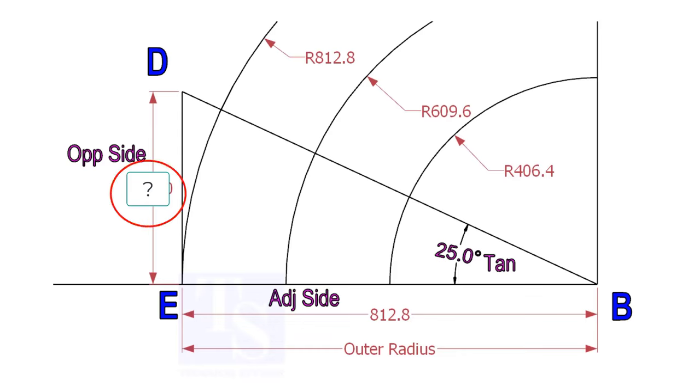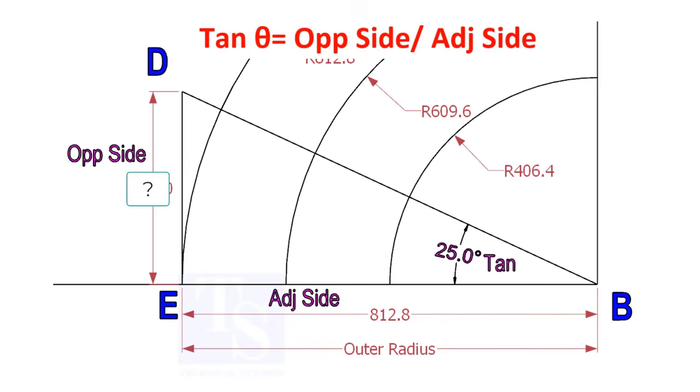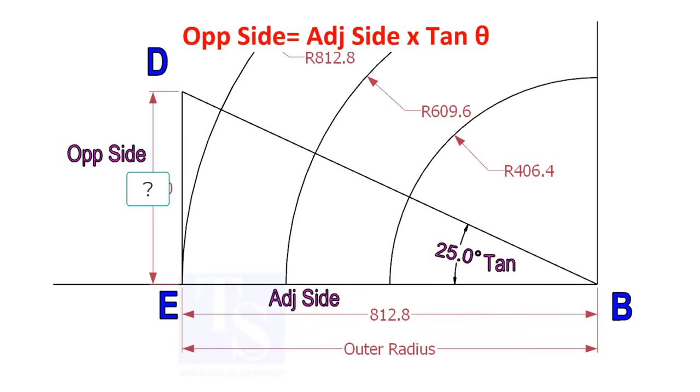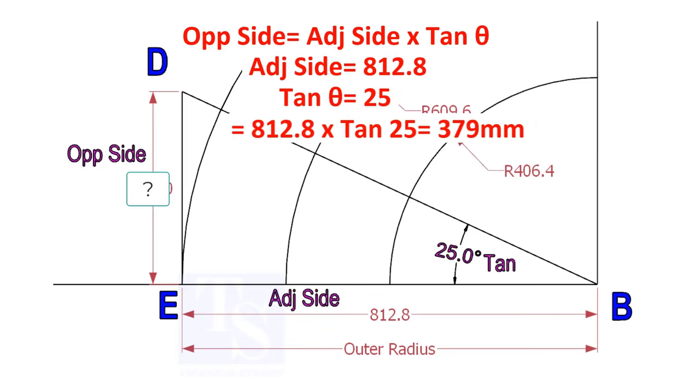To calculate ED, we need to apply the formula, tan-theta equals opposite side divided by adjacent side. Opposite side equals adjacent side multiplied by tan-theta. 812.8 into tan-25 equals 379 millimeters.